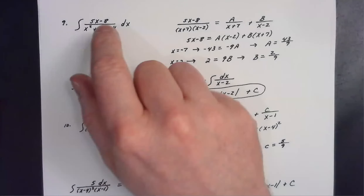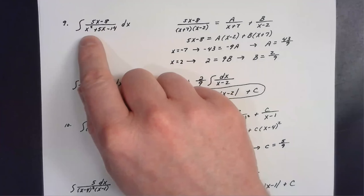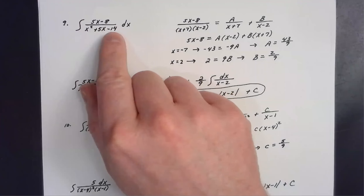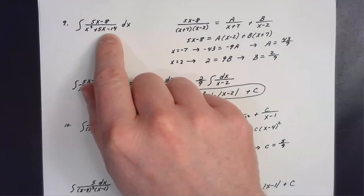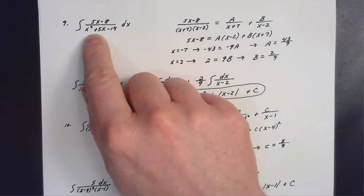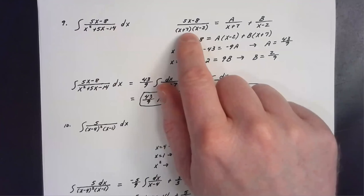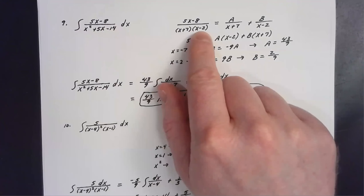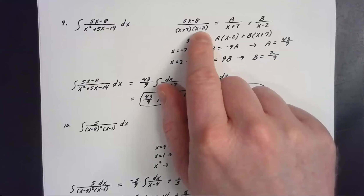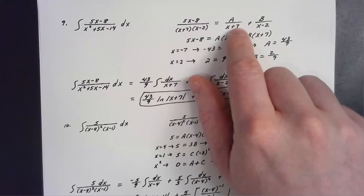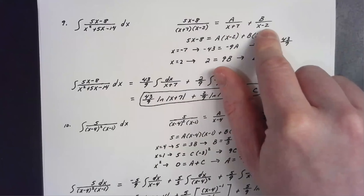Whenever we're thinking about partial fractions, the first thing we know is that we have to have a factored denominator. So in this first one, you just have to factor that denominator first. We need factors of negative 14 that sum to five, and we find that's seven and negative two. So I algebraically decompose the fraction (5x − 8) over (x + 7)(x − 2), which equals A over (x + 7) plus B over (x − 2).